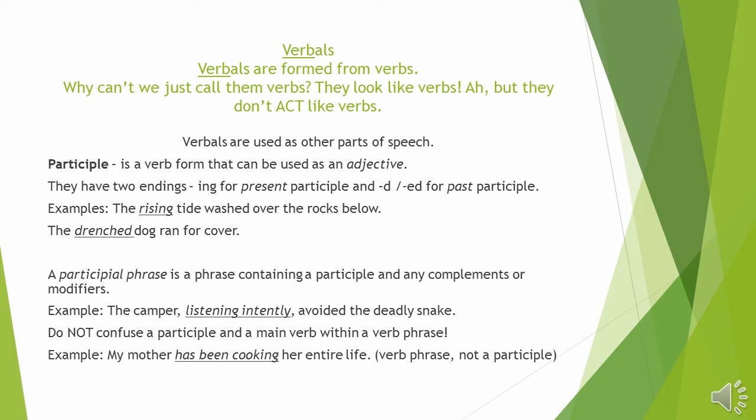Look at the second example: "The drenched dog ran for cover." It ends in -ed, so it looks like a past participle — and it is. What did the dog do? The dog ran; that's the main verb. "Drenched dog" — drenched describes the dog. Therefore, it's the participle, acting as the adjective in the sentence.